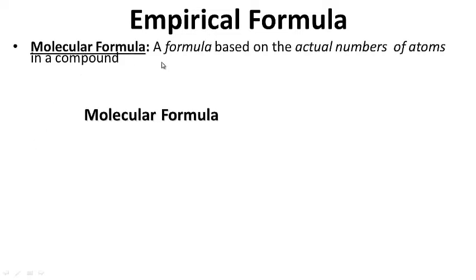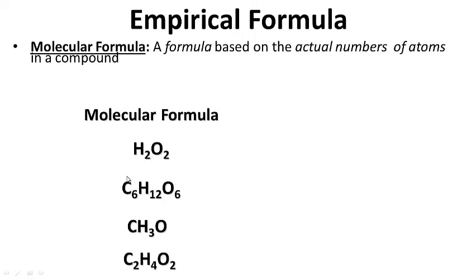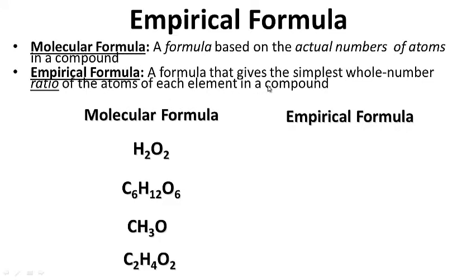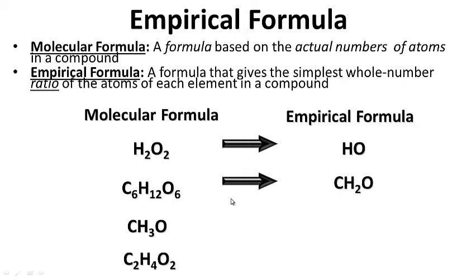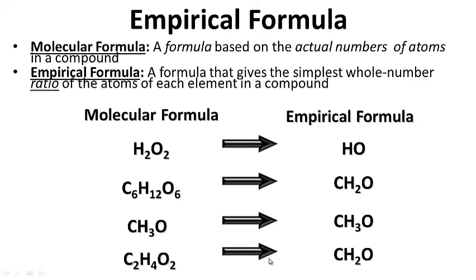A molecular formula is a formula based on the actual numbers of atoms in a compound. For hydrogen peroxide, the molecular formula is H2O2. For glucose, it's C6H12O6. The empirical formula gives the simplest whole number ratio of the atoms of each element in a compound. So the empirical formula for H2O2 is HO, for C6H12O6 it's CH2O, and C2H4O2 also becomes CH2O.